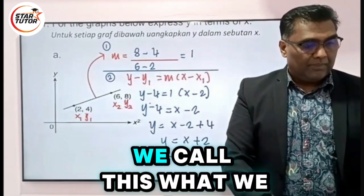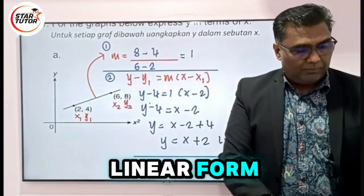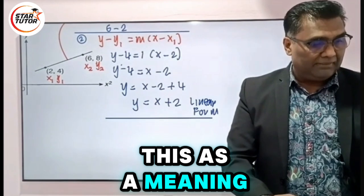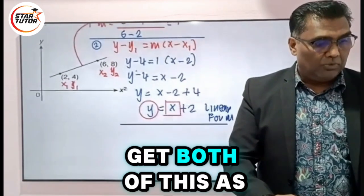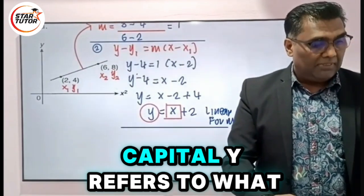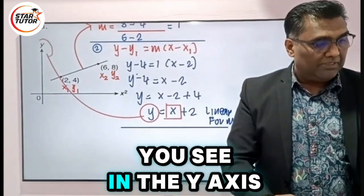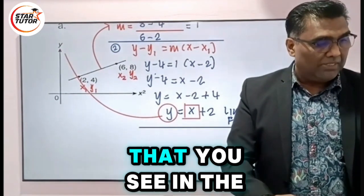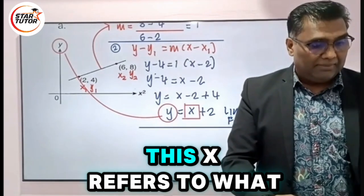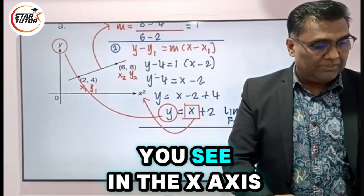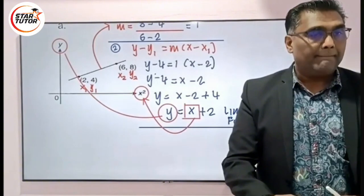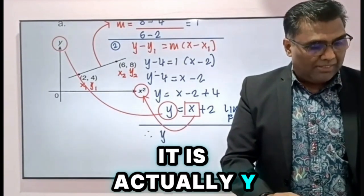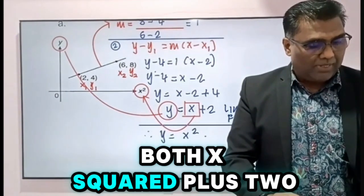We call this the linear form. You must understand both of these as having meaning. Capital Y refers to what you see on the y-axis, and X refers to what you see on the x-axis. So when I rewrite the equation in the linear form, it is actually y = x² + 2.